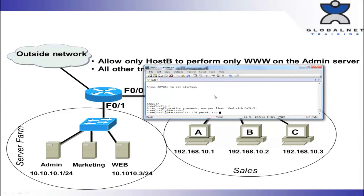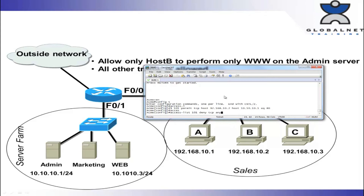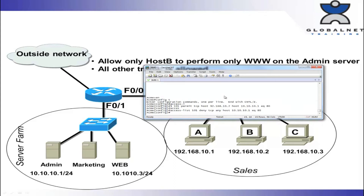You must know this — if you don't understand what port 80 uses, go back to chapter 3 and read that. Access list 101, permit TCP data from host B, going specifically to host 10.10.10.1, equal to port 80. Now only host B can perform WWW on the admin server. We don't want anyone else to do it, so we need to create a deny statement: access list 101, deny TCP data from any source going to the admin server, equal to port 80. So now only host B can perform WWW port 80 on the admin server. All other traffic is allowed, so we permit, deny, and then permit all other traffic.